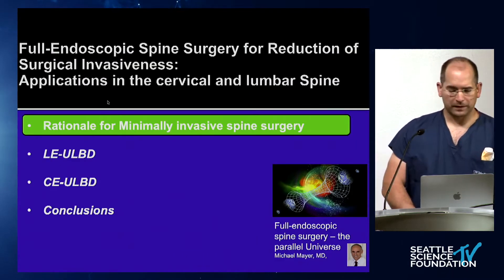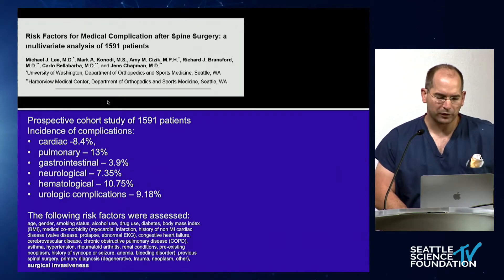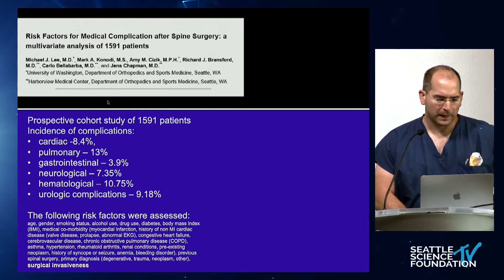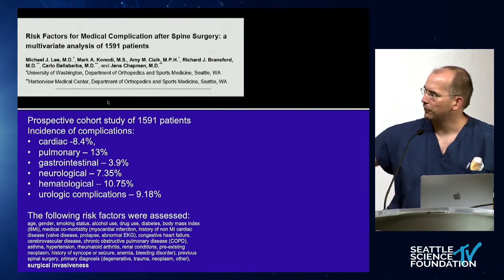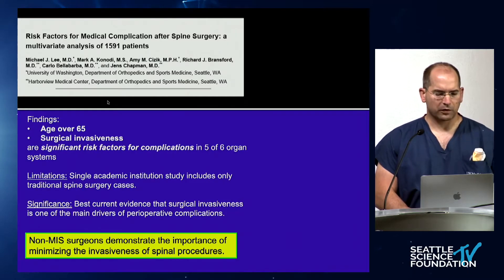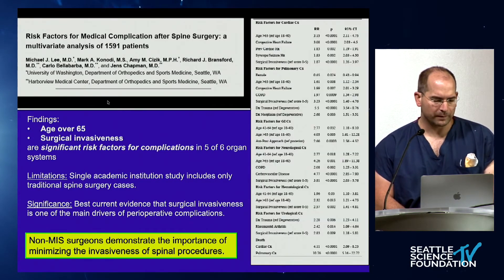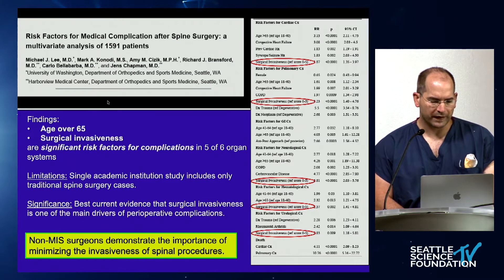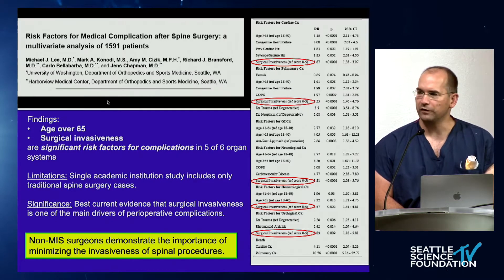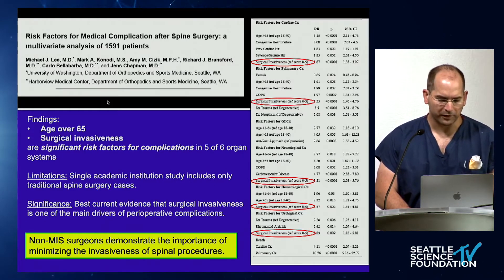The rationale for why we do that really comes from Jens himself. Jens Chapman wrote a paper looking at risk factors of major spine surgery across different organ systems. What they found is that two factors were significantly associated with risks and complications: age over 65 and surgical invasiveness. In five out of six organ systems, complications were correlated with age and surgical invasiveness, demonstrating the importance of minimizing the invasiveness of our procedures.